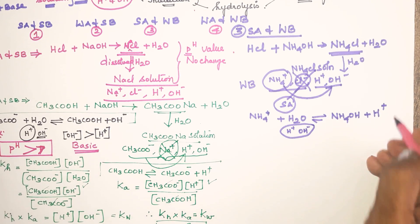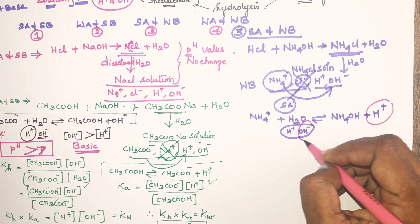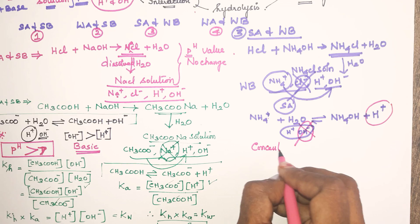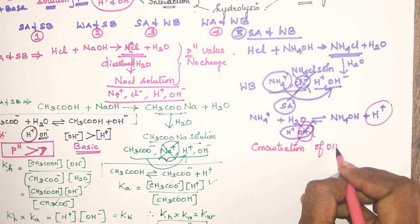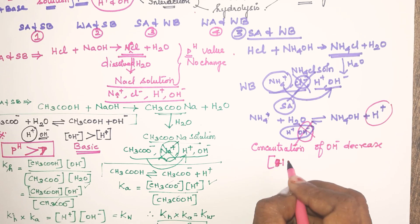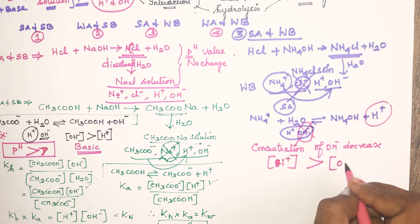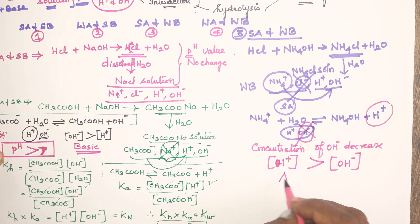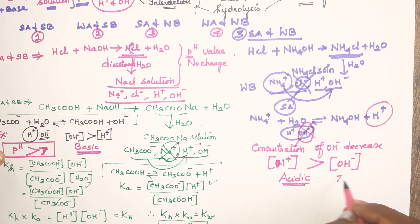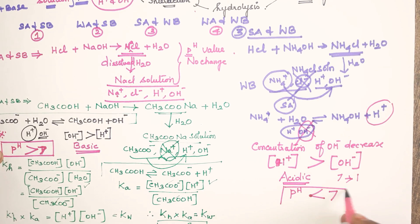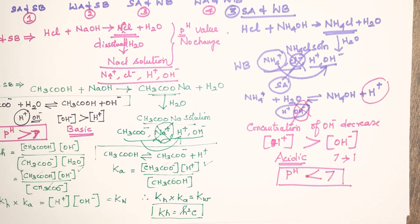NH₄⁺ reacts with water to form NH₄OH, releasing H⁺ ions. This increases the H⁺ concentration so that H⁺ concentration is greater than OH⁻ concentration. Therefore the solution is acidic and the pH value will be less than 7.